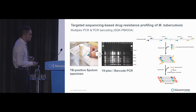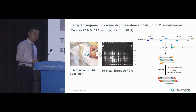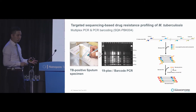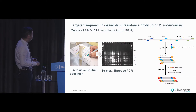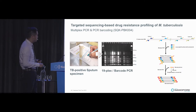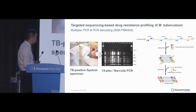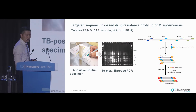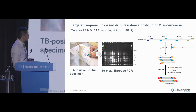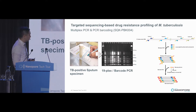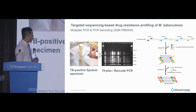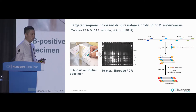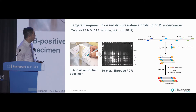Our team is getting samples from chest clinics around entire Hong Kong. When we get a TB-positive sputum, we develop a multiplex PCR which can simultaneously amplify 19 genetic regions from the bacteria. With these 19 amplicons, you can already predict about 11 drug-resistance profiles to the anti-TB agents.